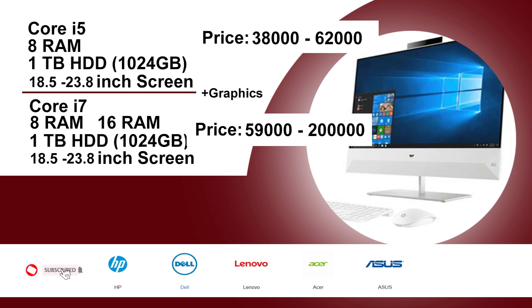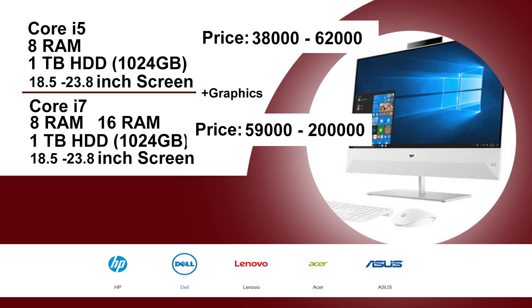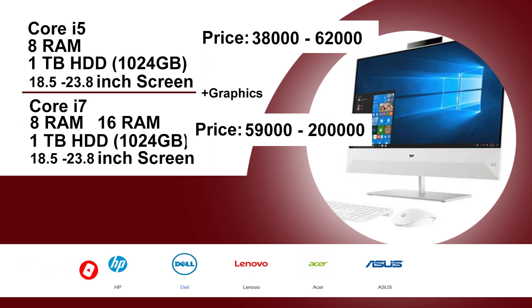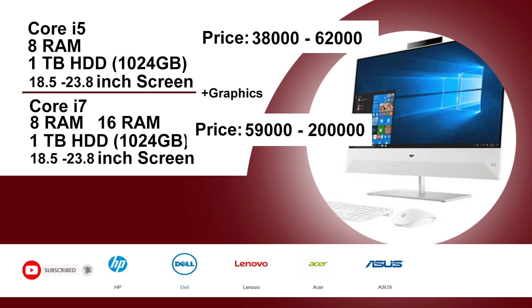This is the monitor display. It is normally 18.5 inches, and screens are available up to 23.8 inches in the market. The monitor is available for video editing setups. In a PC, you can insert a separate graphic card — 2GB, 4GB, or 8GB. You can add speed and rendering performance.